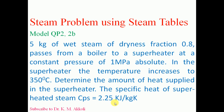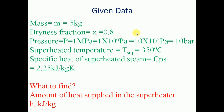Given data: mass of steam M = 5 kg, dryness fraction X = 0.8, pressure P = 1 mega Pascal, which equals 10 bar.